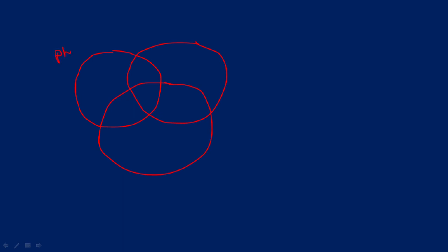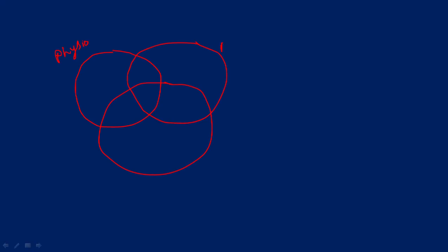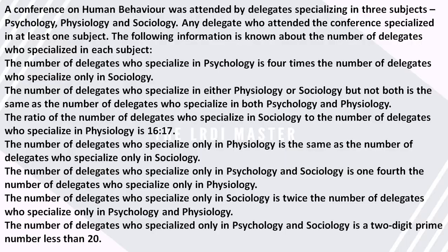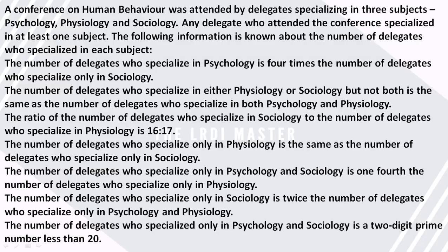Let's make this Venn diagram. Here is our physiology circle, here is our psychology circle — confusion with words can happen here — and here is our sociology circle. I have a key: given the number of delegates who specialized in each subject.